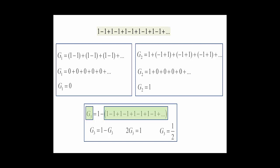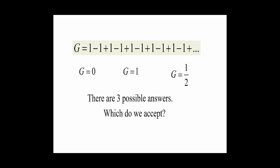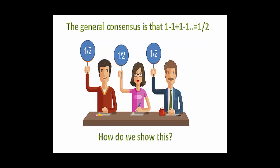So we have yet another solution. We have 0, 1, and 1 half. Surely we can't have three separate answers. Which one do we accept as the true answer? Are all three correct? Or none of them are correct? What do you think? Since Grandi first proposed this infinite sum, there was a lot of infighting amongst mathematicians about exactly this problem. And since then, it's generally agreed in the mathematics community that the answer is a half.